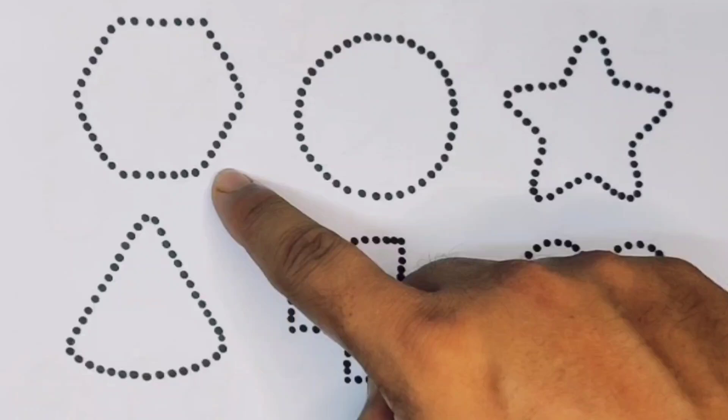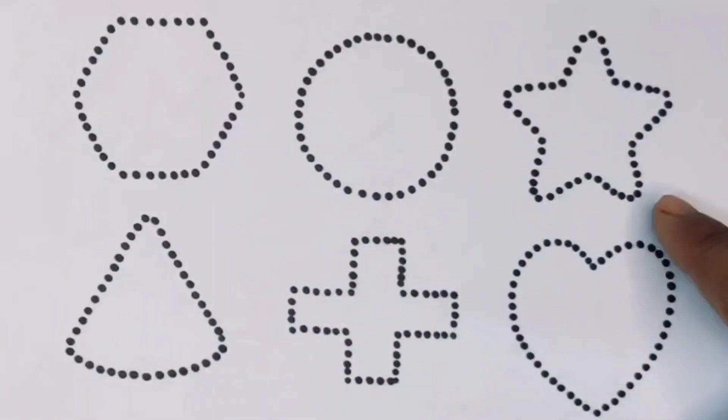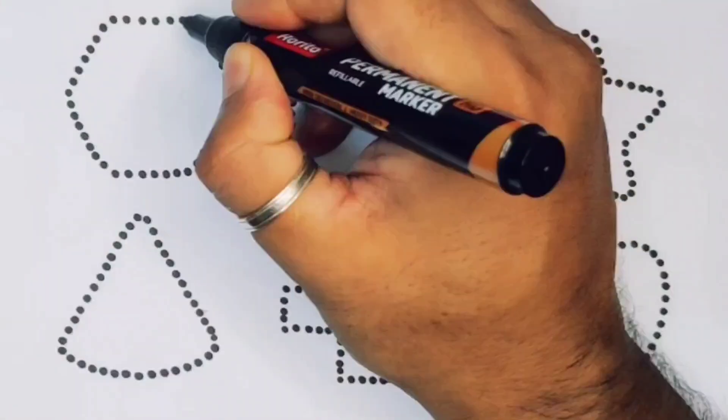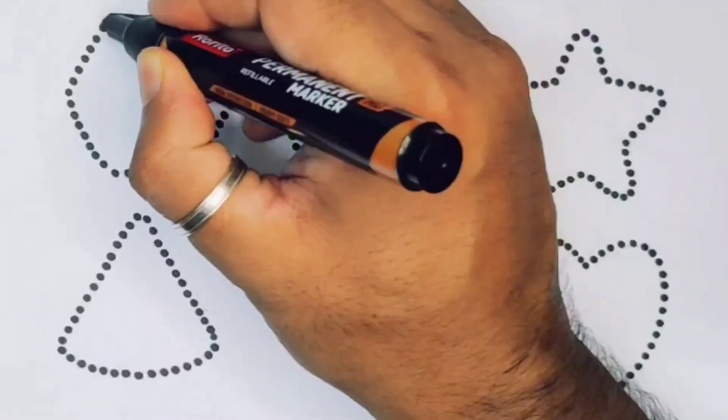Hexagon, circle, star, triangle, cross, and heart. First we're going to draw the shapes. Hexagon.